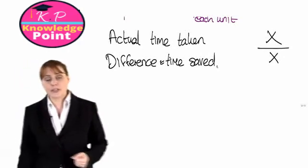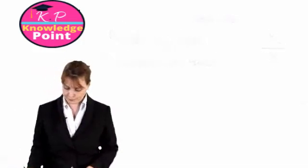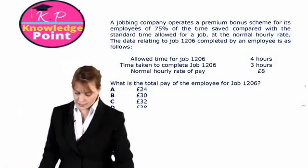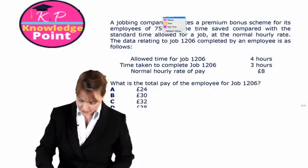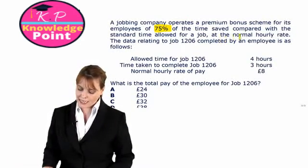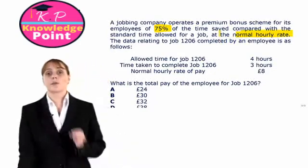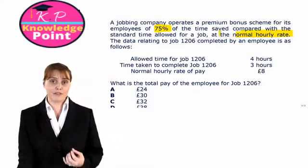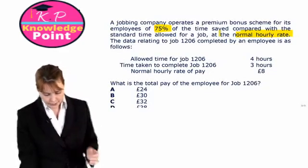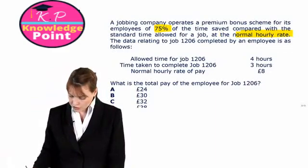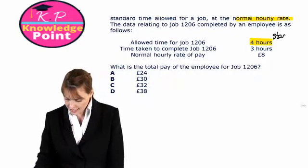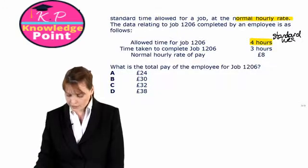Let's have a look at an exercise now to see how we deal with our bonus. We are told a jobbing company operates a premium bonus scheme for its employees of 75% of the time saved compared with the standard time allowed for a job at the normal hourly rate. In other words, this individual will get paid 75% of their basic rate for each hour they have saved. Then we are given the data relating to a particular job.